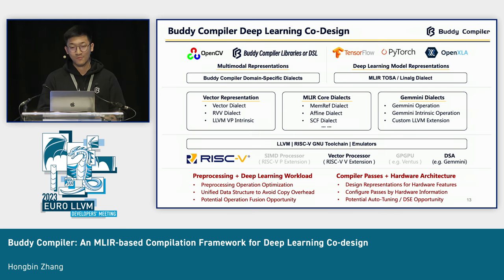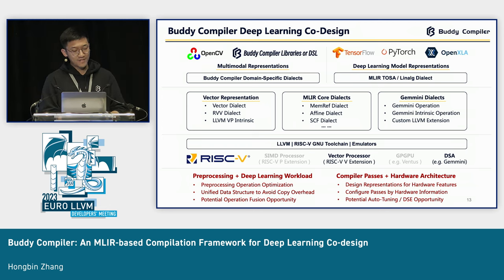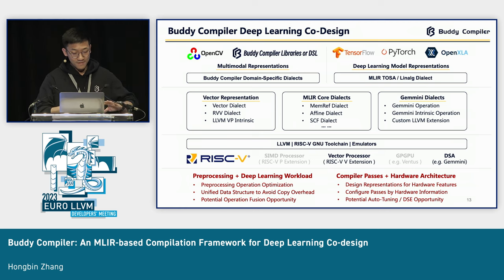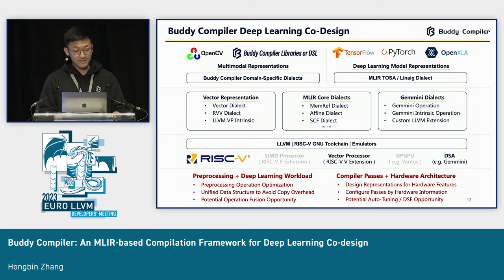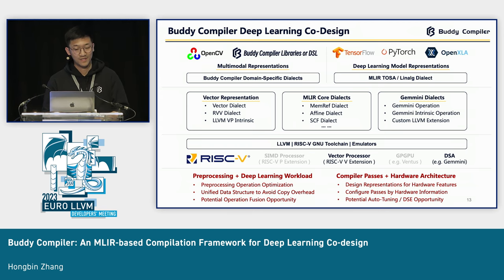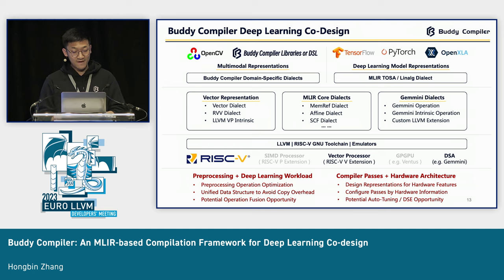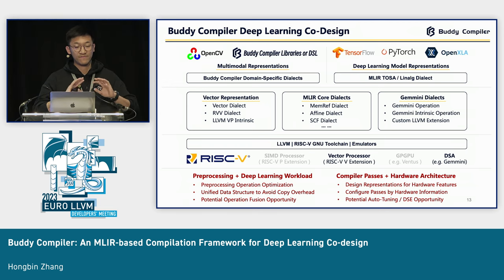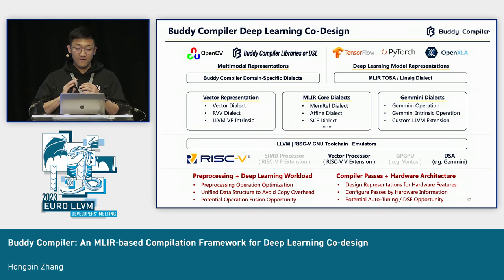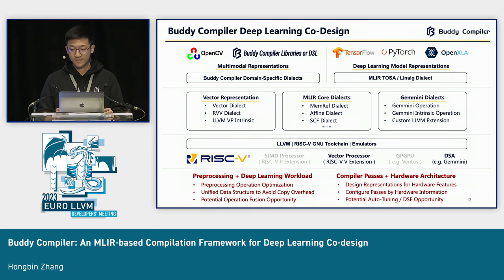Now I can talk about how the co-design actually happens. I see two main points. The first is co-designing the pre-processing and deep learning workloads together: we can improve the performance of pre-processing itself, unify the data structures between pre-processing and deep learning to avoid copy overhead, and potentially exploit fusion opportunities by unifying the two stages.